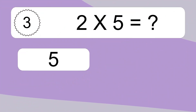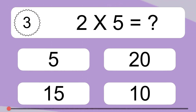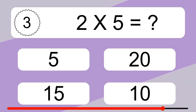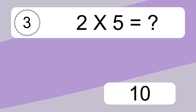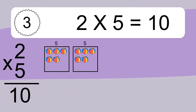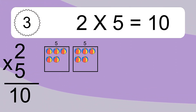2 times 5 equals what? 2 times 5 equals 10. We have 2 boxes and each box has 5 colorful balls inside. If you count all the balls in all the boxes together, you will have 2 times 5 balls.